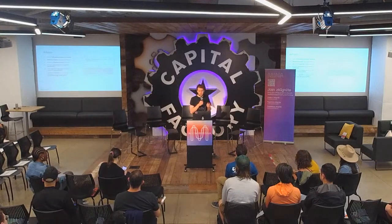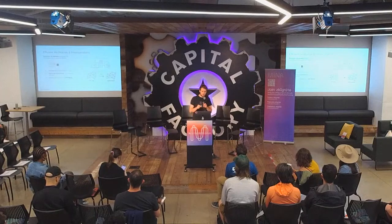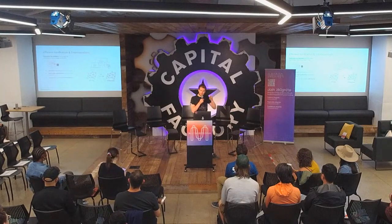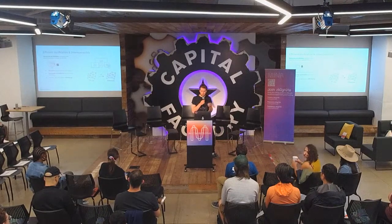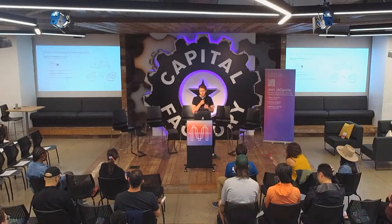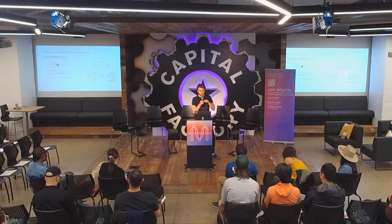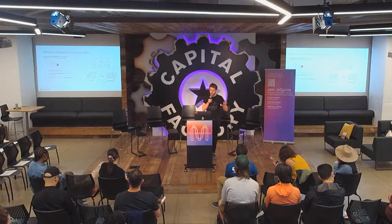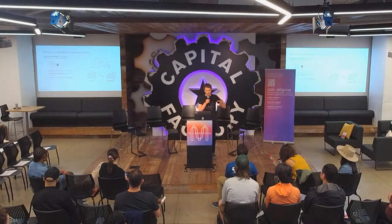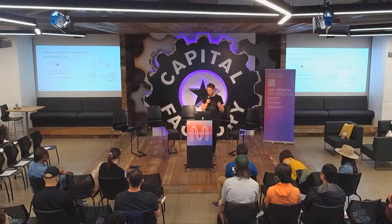Mina is easy to verify: each time you make a block, you're recursively verifying the previous block as well as the state transition to the new block, giving you an inductive recursive proof all the way back to genesis. This means you can verify the whole thing in a few kilobytes — you can actually fully run a full node on your browser or device. We can also get really secure ZK bridging between chains like Mina and Ethereum, running a Mina full node inside an EVM contract.